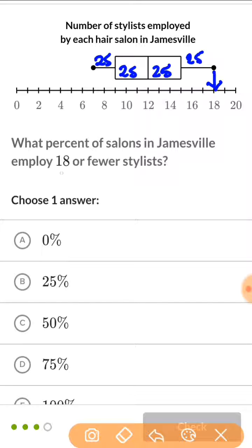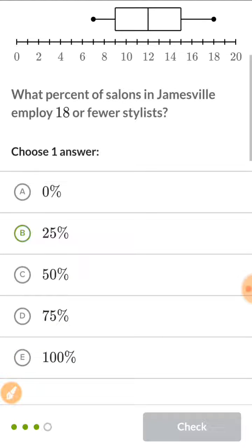The question asks 18 or fewer. Well, all of the data points is going to be fewer than 18. So the answer must be 100%. So 100% is going to be fewer than 18. And the leftovers, 0%, is going to be more than 18. So 100% would employ 18 or fewer stylists.